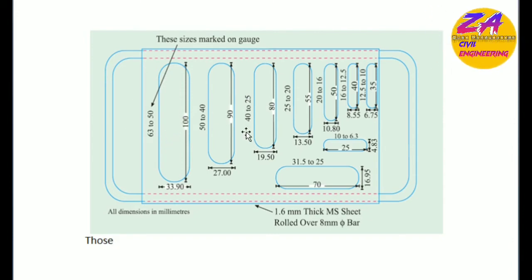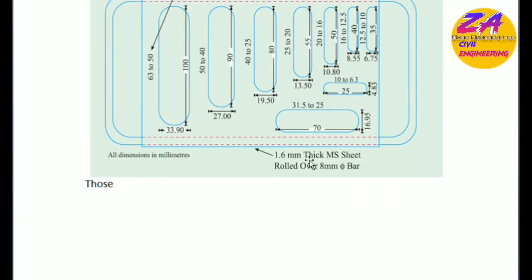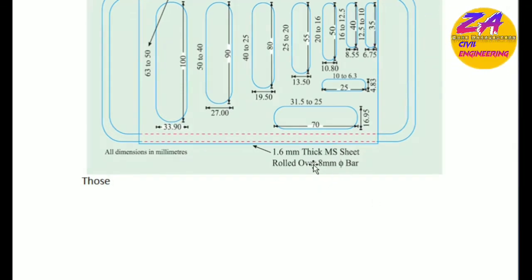Retained particles are called elongated particles. These are holes with diameter 27 millimeters width and 19 millimeters length. Thickness is 1.6 millimeters and rolled over 8 millimeters MS bar. These are the characteristics of this apparatus.